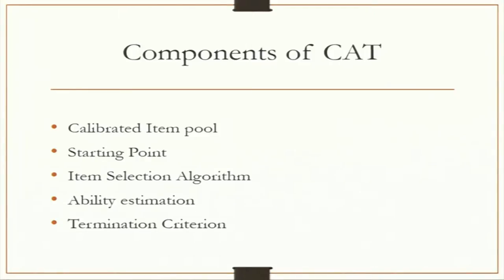Next is the item selection algorithm: as the examinee progresses, what particular question from the item pool should be picked to best match his ability. Then is ability estimation — based on the student's responses, we estimate his ability and provide a question of equivalent difficulty. Next is the termination criteria, the most important part. There is a maximum time limit and a maximum number of questions, but the test can finish earlier if the algorithm's termination criteria is satisfied.